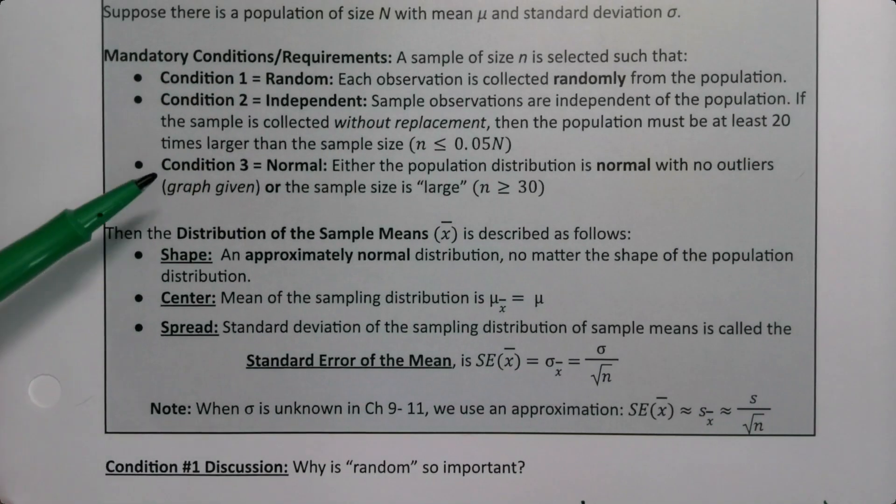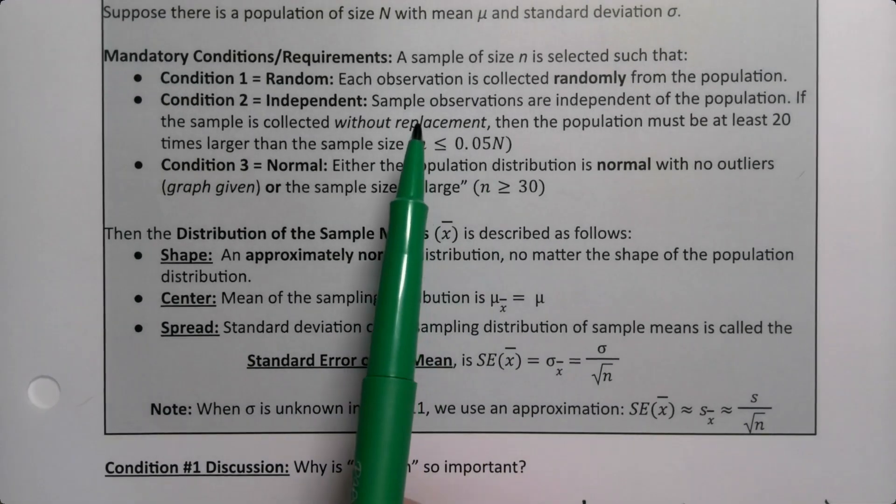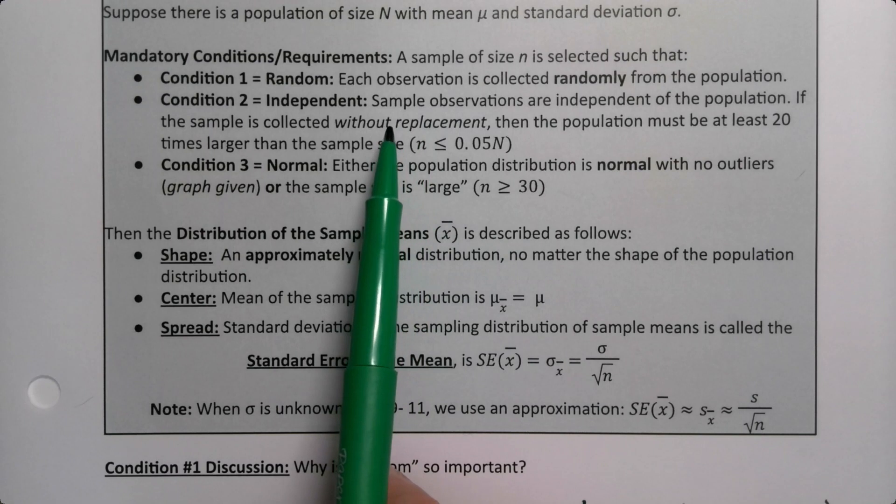Condition number two is a little weird to get your head around. So we want our observations to be independent. We want the sample observations to be independent of the population. If the samples collect without replacement, then the population must be at least 20 times larger than the sample size. Wait, what? So if you're collecting the samples with replacement, without the word out in there, with replacement means basically...